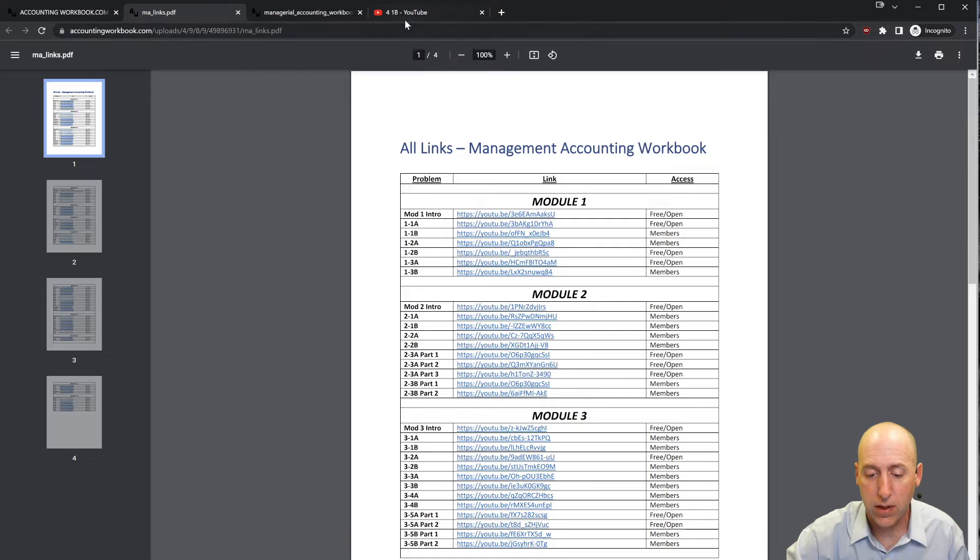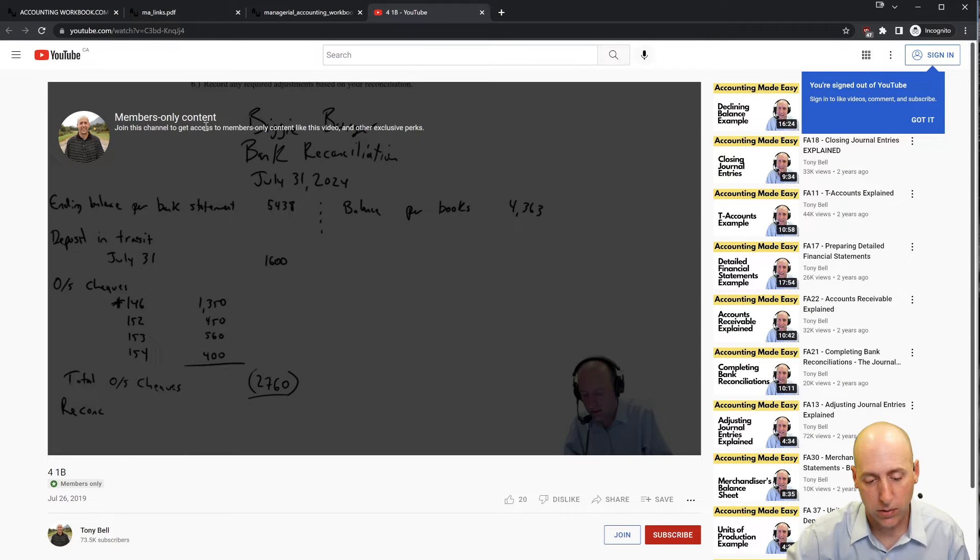If you click one of the members links, it'll take you to a page that says members only content. If you'd like access to that content, just hit the join button. Okay, let's jump into the problem.